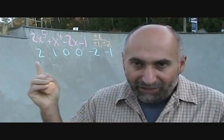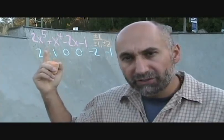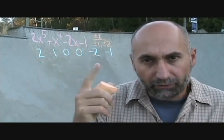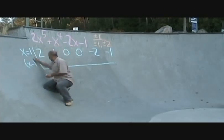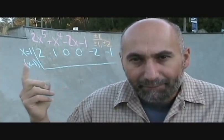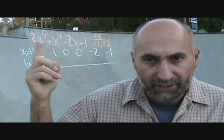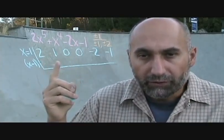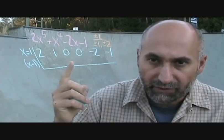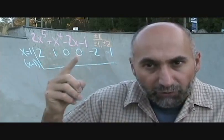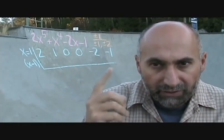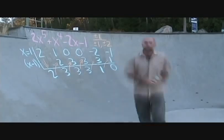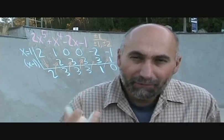We always have one extra term than whatever the power is. So we lay down the synthetic division statement and choose x equals 1. We take the 2, drop it down, multiply by 1, bring it up, add those two together, bring it down, multiply by 1 — just do the zigzag. Every time going across we're multiplying by 1, and we see what we end up with.